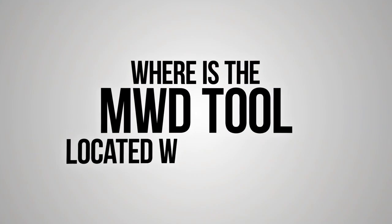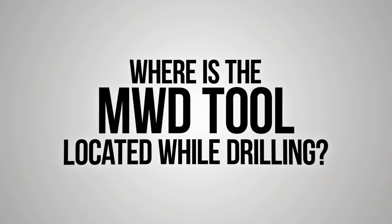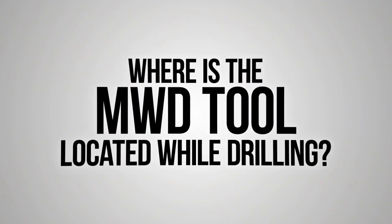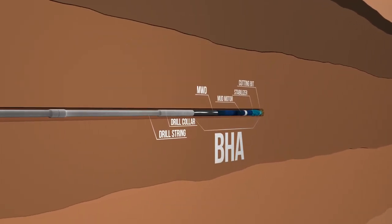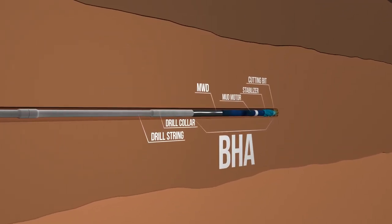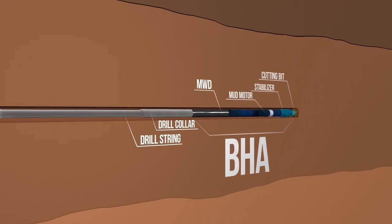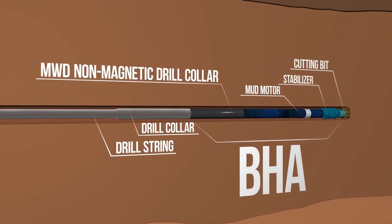The tool is mounted in the bottom hole assembly, or BHA, of the drill string, and is encased in a non-magnetic drill collar.